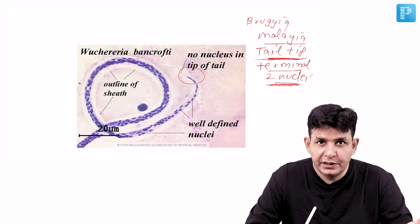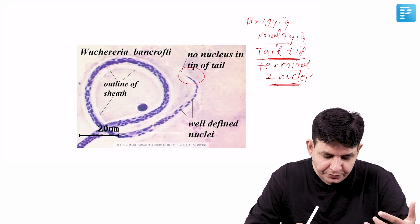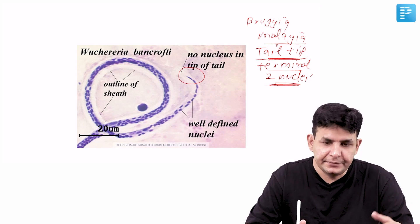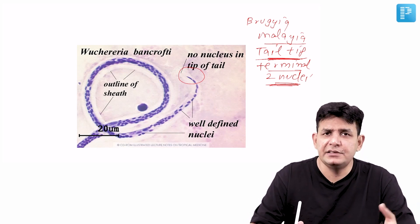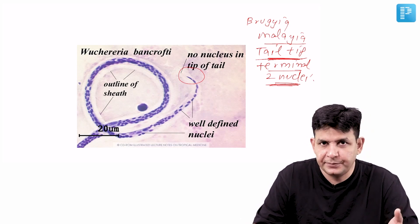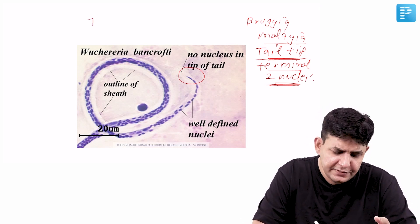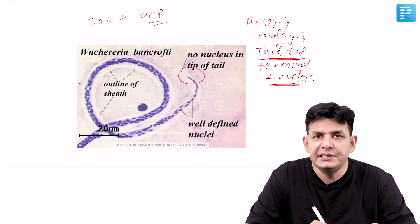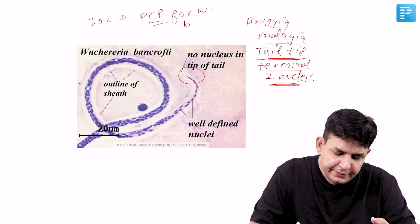The drug of choice for this is obviously DEC, diethylcarbamazine. But for the chronic filariasis you have to go for surgery. And the investigation of choice nowadays is PCR, which is preferred for Wuchereria bancrofti.